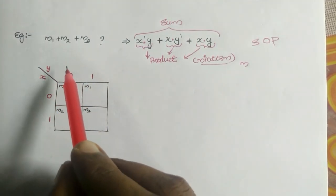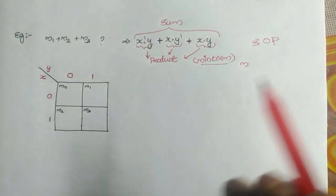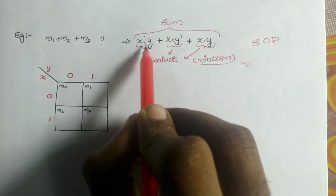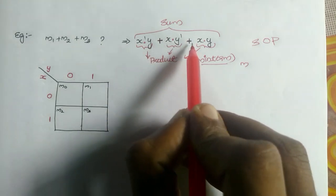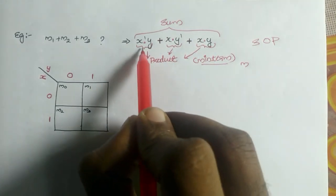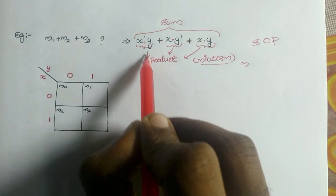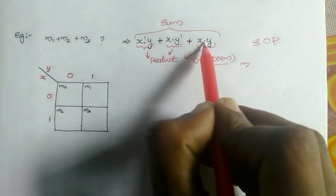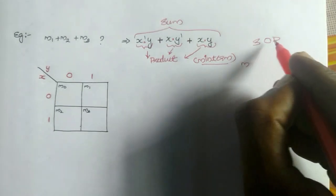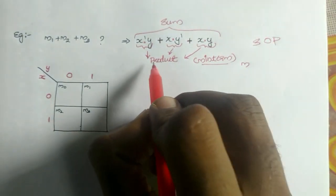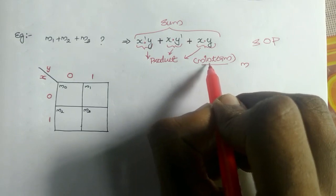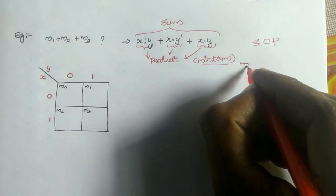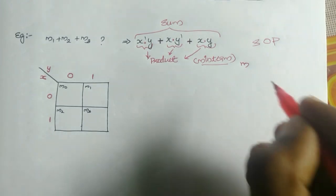Before explaining this example, let's look at a Boolean expression: X bar dot Y plus X dot Y bar plus X dot Y. Each term is a product term and we are summing up. So this is sum of products, sum of product or SOP. Each product term is termed as minterm, and we represent each minterm with a small letter M.